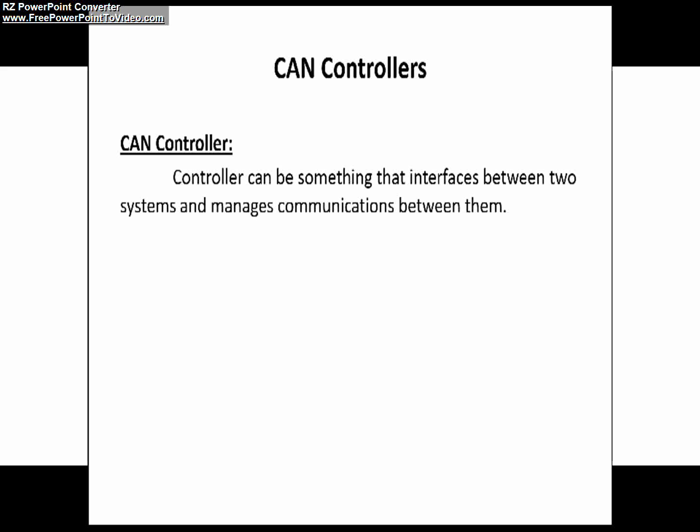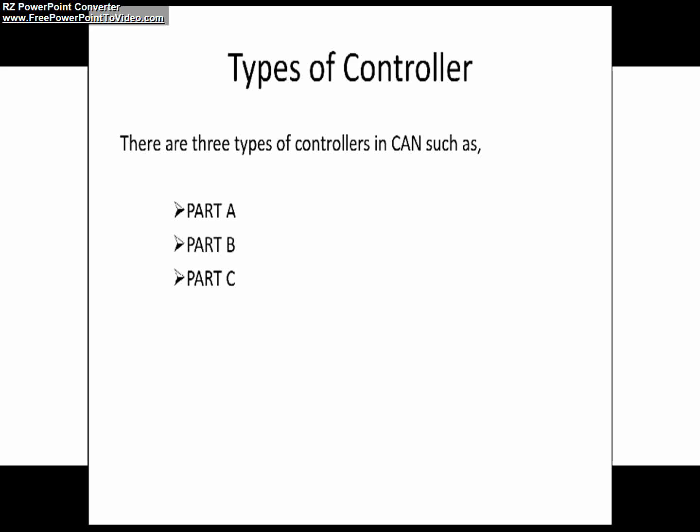I hope everybody understood the definition of the CAN controller. Now coming to the types of controller — here we are also going to understand how we can choose the appropriate controller for our applications in an automotive network. There are three types of controller in CAN: Part A, Part B, and Part C.